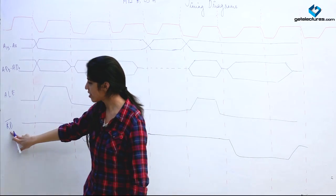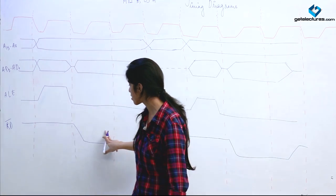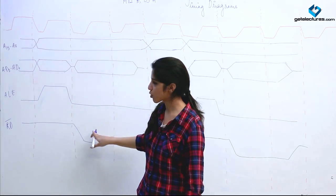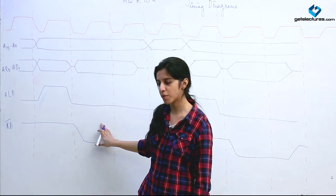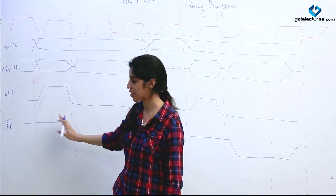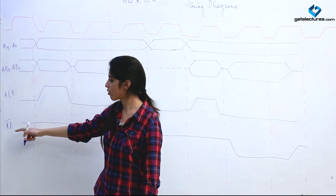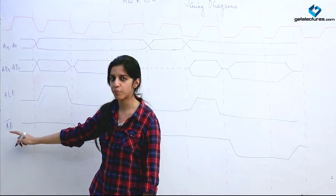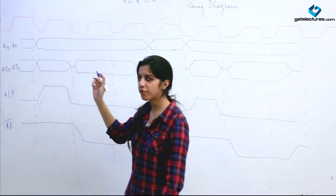The read bar signal controls reading. If read bar is 0, the processor is going to read something from memory. If read bar is 1, no reading procedure will take place.